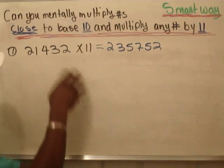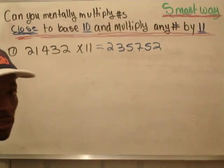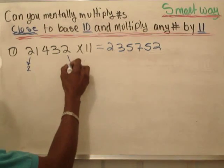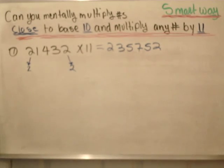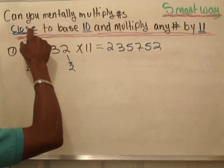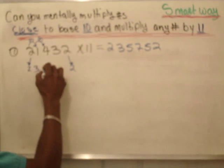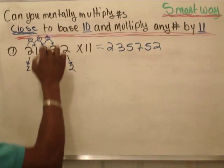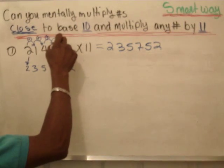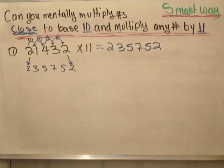All I had to do is use the shorter method to come up with this number. What you're going to do: bring down the first number, bring down the last number, and then add anything in between. So 2 onto 3 gives you 3; 1 onto 4 gives you 5; 4 onto 3 gives you 7; and 3 onto 2 gives you 5. And that's how we come up with the answer.